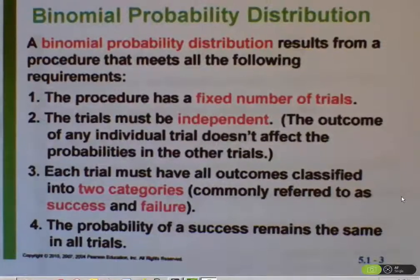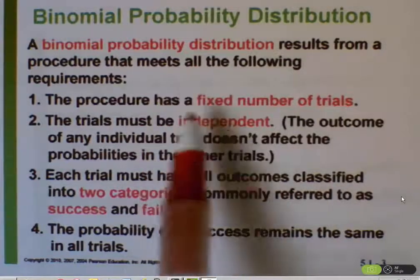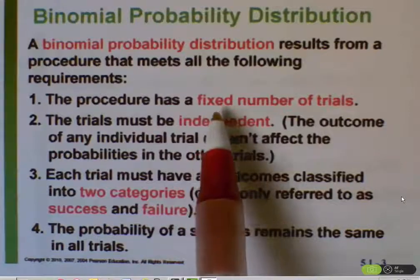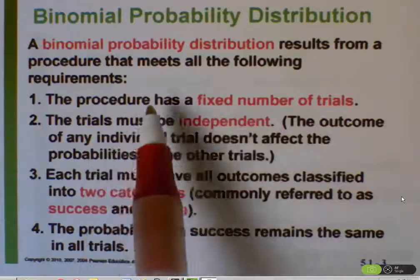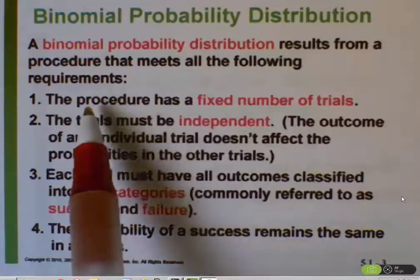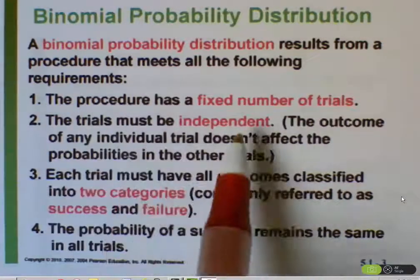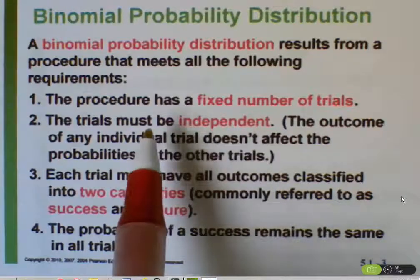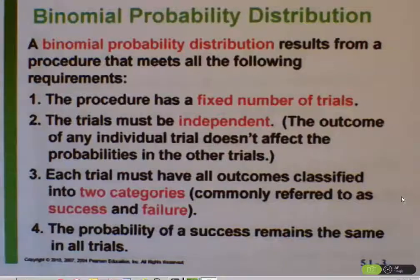It does have other requirements, though. In order to be a binomial probability distribution, there has to be a fixed number of trials. You can say I'm going to roll a die 10 times — that's a fixed number of trials — but you can't say I'm going to roll the die until I get a 7. The trials must also be independent: what happens on one trial can in no way affect what's happening on another trial.